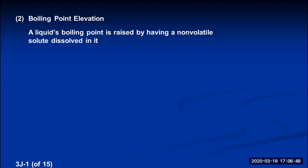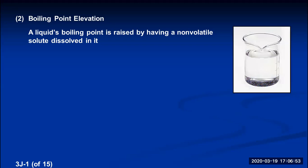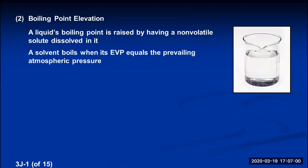To understand why that is, we're going to go back and talk about what the definition of the boiling point of a solution is. When something like water boils, we form bubbles inside of it. The bubbles can only exist if the solvent has an equilibrium vapor pressure equal to the prevailing atmospheric pressure. Definition of boiling point: solvent boils when its EVP equals the prevailing atmospheric pressure.